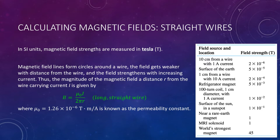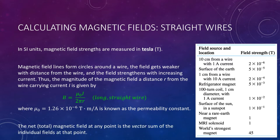This equation is for a single wire. When multiple wires are present in a region, find the total magnetic field by taking the vector sum of each individual field at that point. For example, with two wires, find the magnetic field strength from each wire and then add them together as vectors.